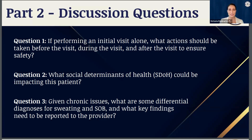For social determinants of health, always be thinking about neighborhood factors: are they in a pharmacy desert or a food desert? Is public transportation available? What is the condition of the home — do you need to perform a home safety assessment? Correlate that with what she has access to from a social determinant standpoint and what community resources are available.